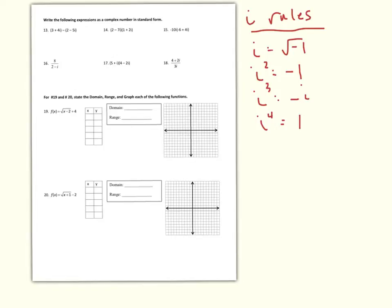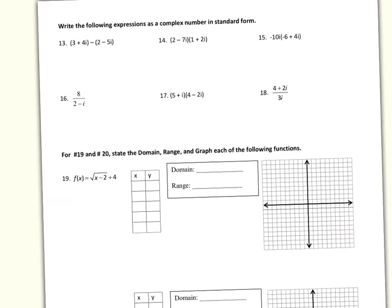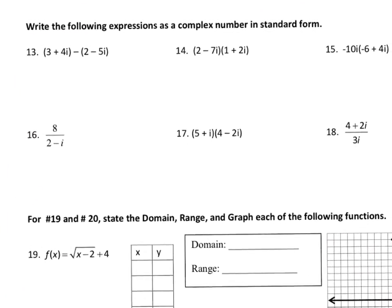When you multiply i times i, the radical goes away — you have no more i. That's especially important in questions 16 and 18, where there are i's on the bottom. Since i's are like radicals, you can't leave them in the denominator either. Let's look at number 14 and then number 16 to see how to get i off the bottom.